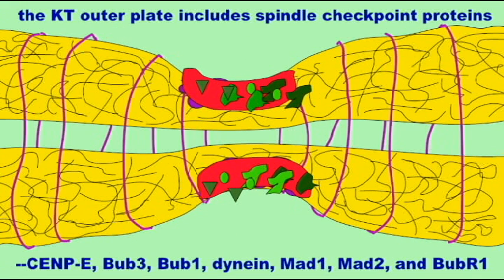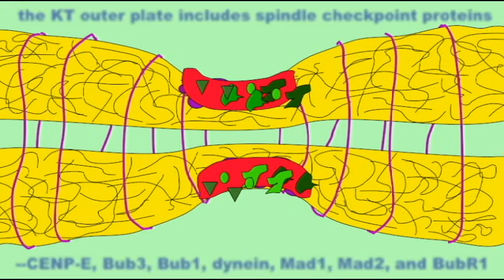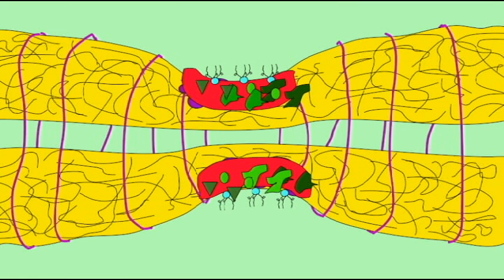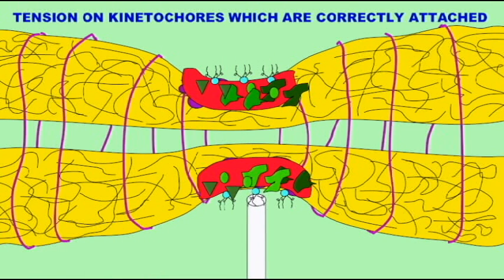In the appropriate situation, the opposite kinetochores are attached to microtubules which would pull it towards opposite poles of the cell. This provides tension, and so this tension is a signal that the connections have been made properly.